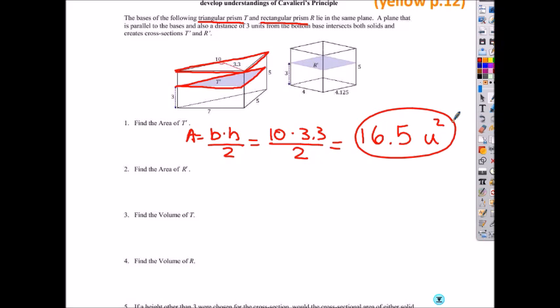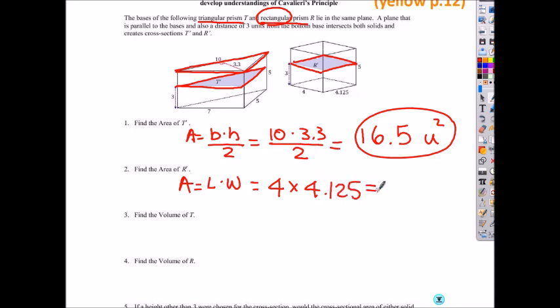What about area of R prime — which is this? What shape is this? It says it's a rectangular prism, so it has to be a rectangle. How do you find the area of a rectangle? Length times width, which is 4 times 4.125. Then what do you get? 16.5 units squared. What do you notice? At the same height, the cross-section is not the same shape — but this one didn't have the same shape and it ended up being the same area.